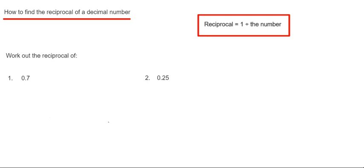The first one is to work out the reciprocal of 0.7. To do this we just do 1 divided by 0.7. You could put this on your calculator. If you haven't got a calculator you will need to change your decimal into a fraction. So 0.7 is the same as 7 tenths. We need to do 1 divided by 7 tenths.